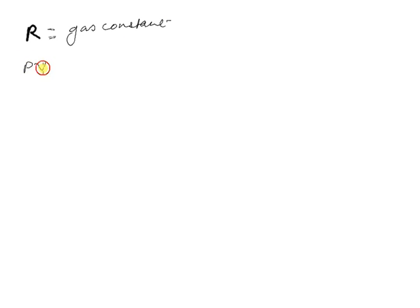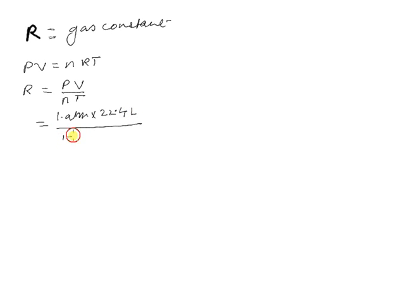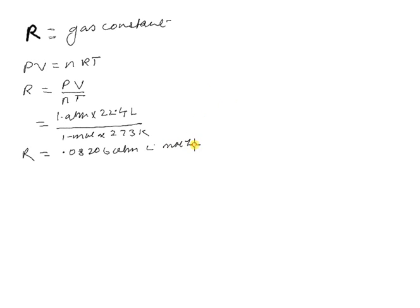Let's learn to convert the gas constant R into different values. We can derive R from PV = nRT, the ideal gas equation. Rearranging gives R = PV / nT. Putting in the values — pressure is 1 ATM, volume is 22.4 liters, 1 mole, and temperature is 273 Kelvin — we get R = 0.08206 ATM·liter per mole per Kelvin.